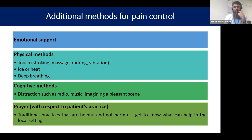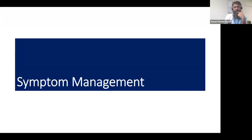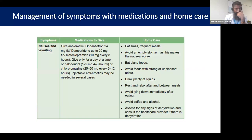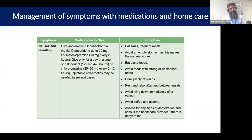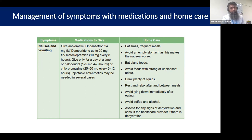Emotional support, physical methods, and cognitive methods like distraction or prayers are really important in our communities in India where people feel comfortable with these things. We are not imposing what we feel — our job is to support them in whatever they like. Other symptom management includes nausea and vomiting, because patients will be on so many medications at this stage with so many side effects. These need to be managed with unfortunately some additional pills, home remedies, and dietary adjustments.